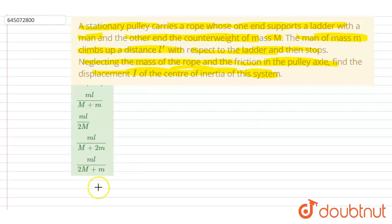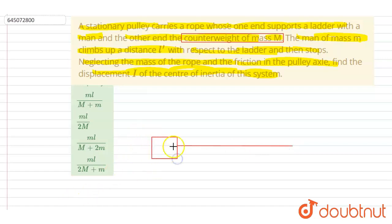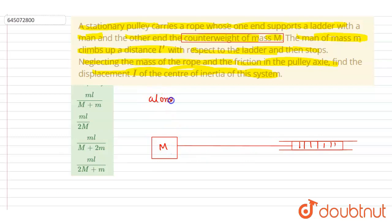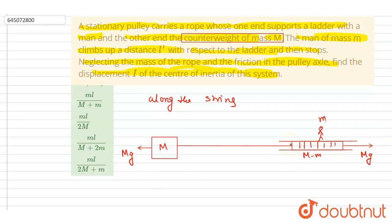The other end has a counterweight, so the net force along the string will be zero. Along the string, the weight acts downward. The man and ladder together have the same mass as the counterweight M. So solving along the string, there should be no displacement of the system along the string, because there is no net force along it.